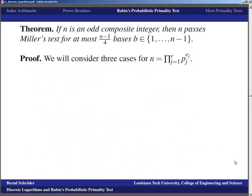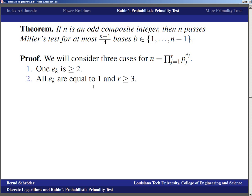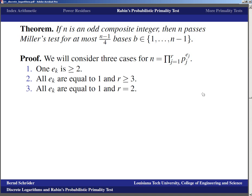We now consider three cases for N = ∏ p_j^(e_j): Case 1 — some e_k ≥ 2; Case 2 — all exponents are 1 and r ≥ 3 (at least three distinct prime factors); Case 3 — all exponents are 1 and r = 2 (N is a product of exactly two distinct primes). The bulk of the argument for Cases 1 and 2 is similar, while Case 3 requires more careful handling.